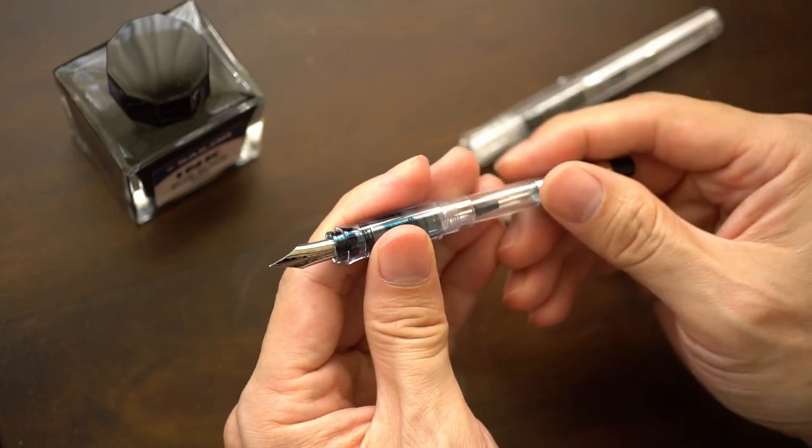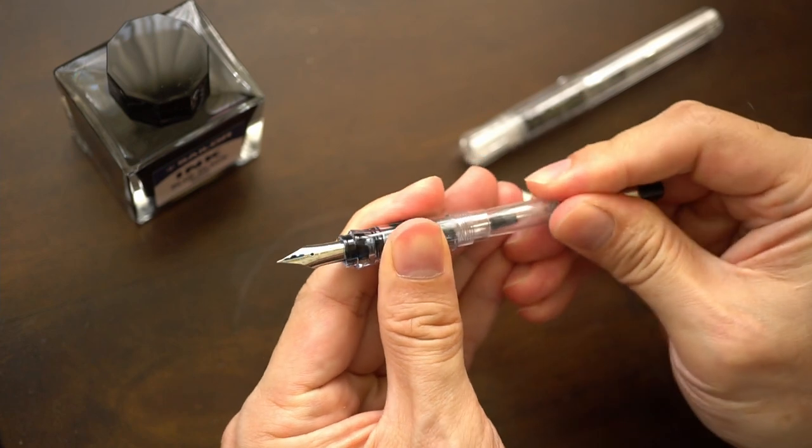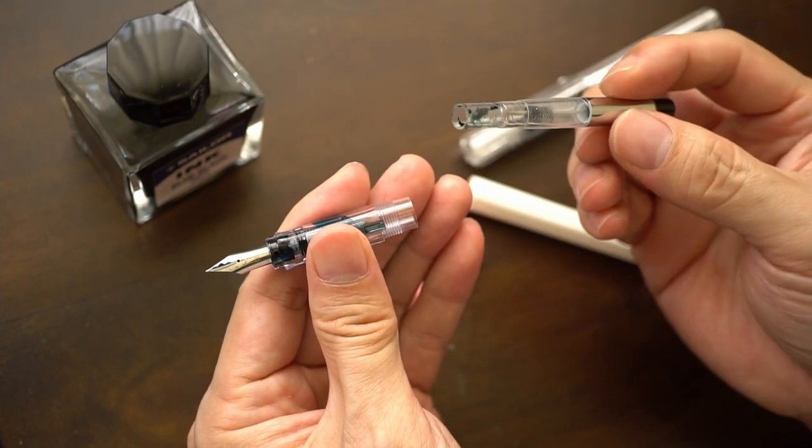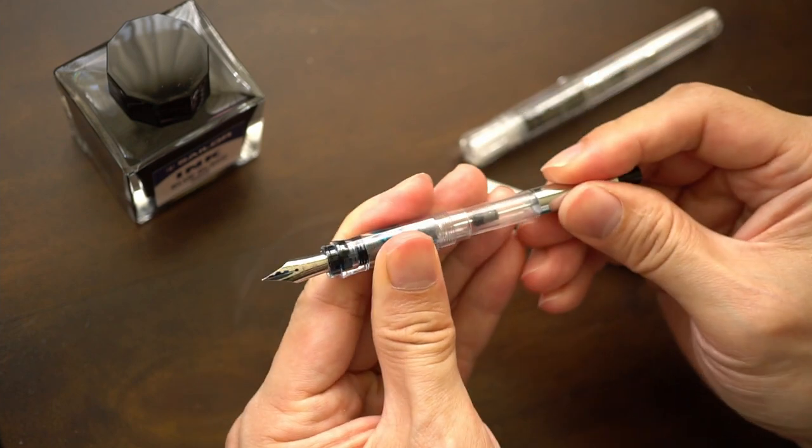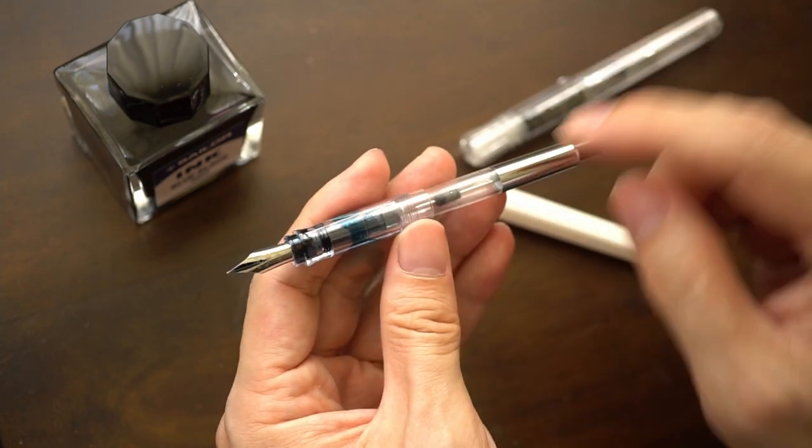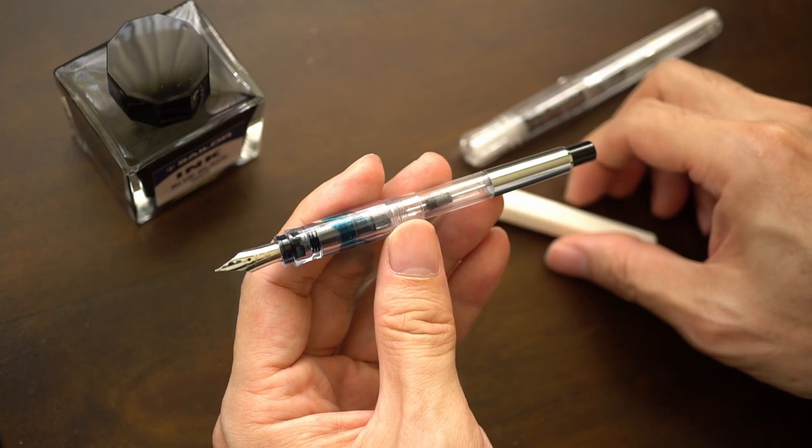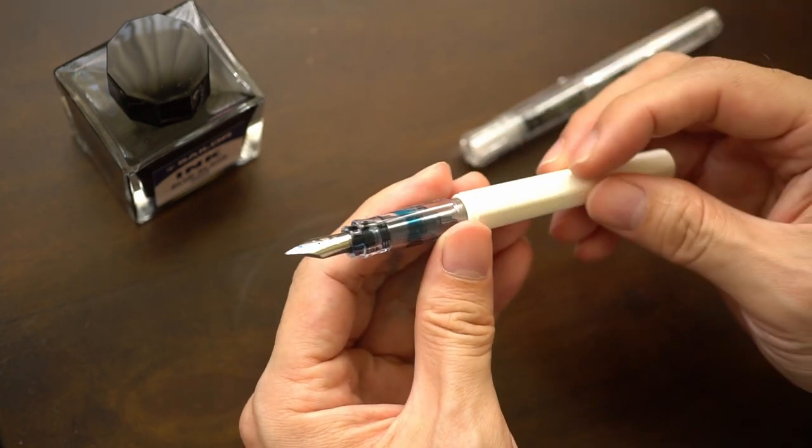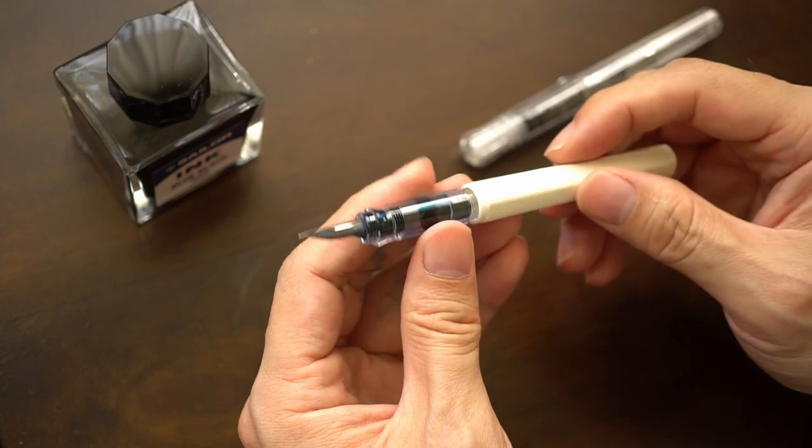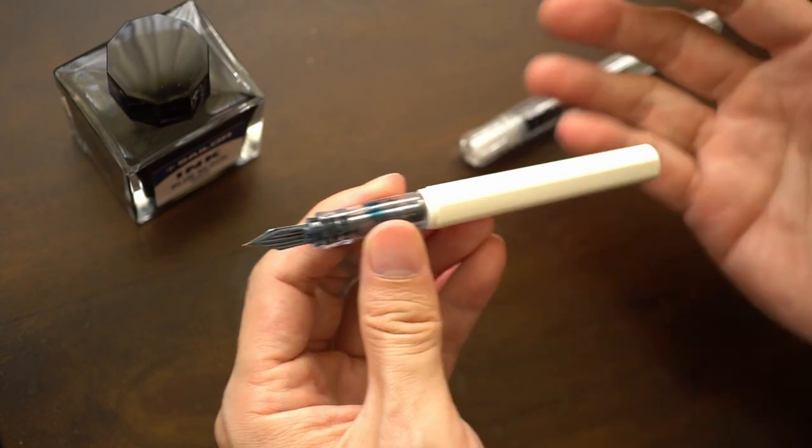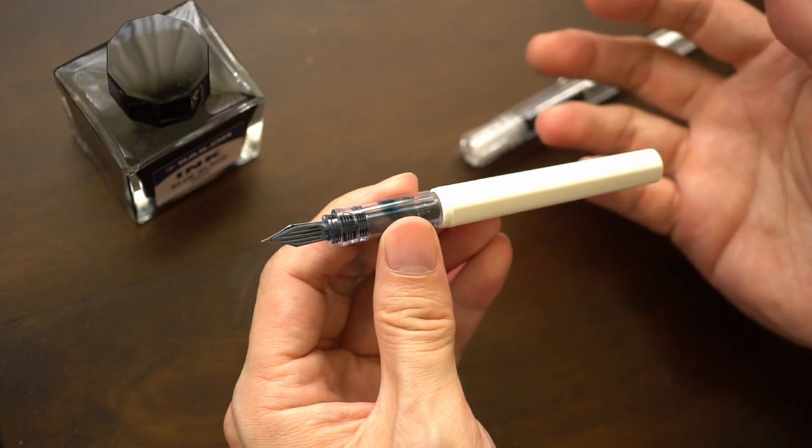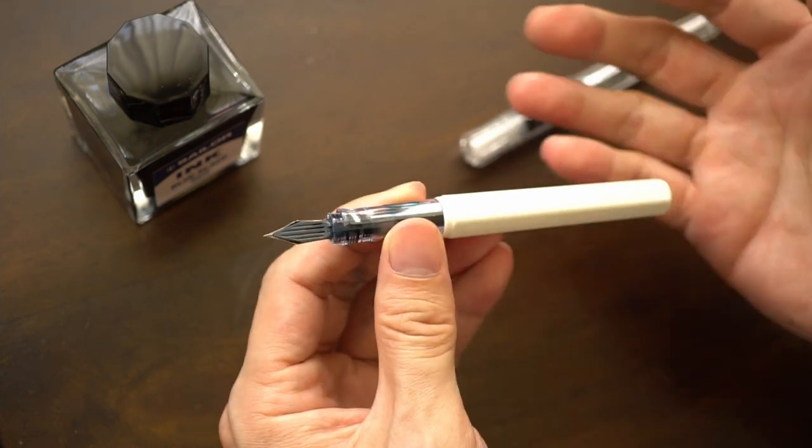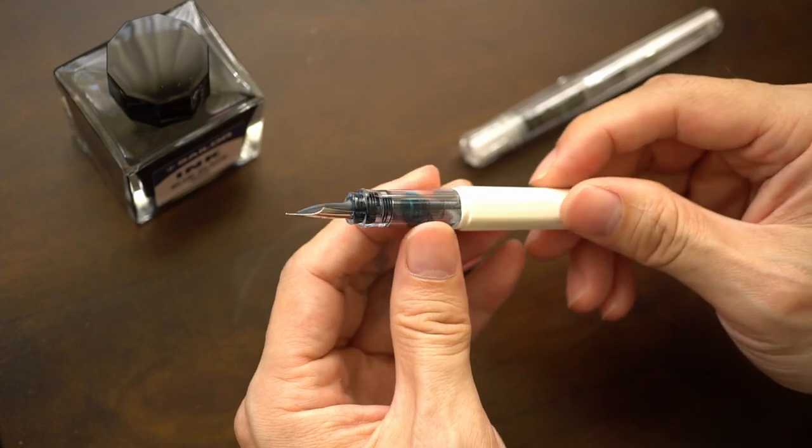if you've been using other Pilot pens before like for example the Custom 74, you will notice that the CON-70 which is probably the largest converter which Pilot has, would fit into the body of this pen which is kind of an interesting thing because CON-70 won't actually fit in a Metropolitan for example or even a Plumix or any other of the lower end Pilot pens.